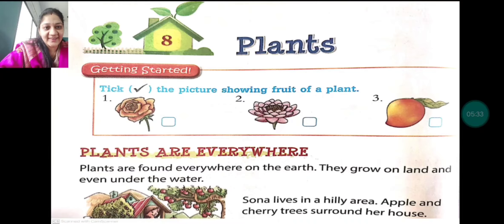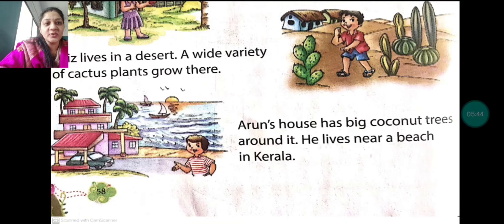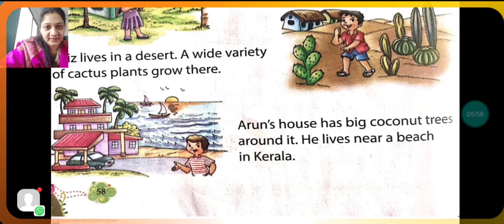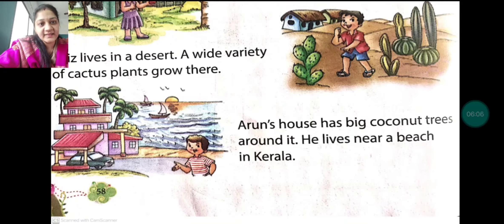Next: Aziz lives in a desert. A wide variety of cactus plants grow there. Please underline C-A-C-T-U-S. Cactus is a thorny plant which requires very little water. A desert is a 'registan' — so cactus plants need less water, and since deserts have less water anyway, these plants are found in deserts.